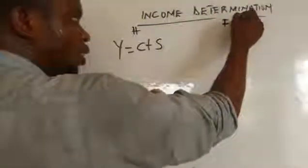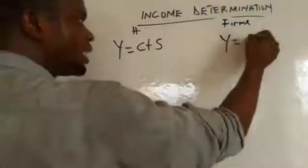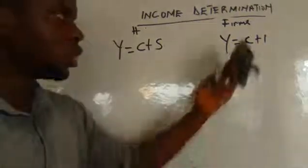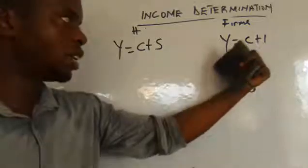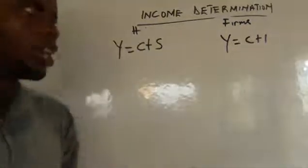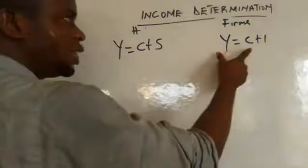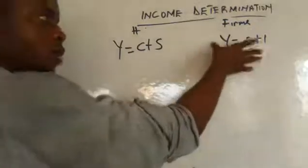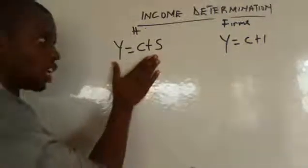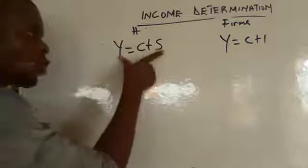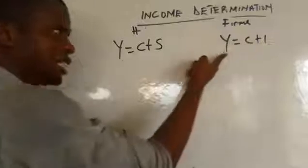For the firms, the second participant, the income function becomes Y = C plus I, where C is consumption and I is investment. The household income function (Y = C + S) is aggregate supply, because the saving portion is the supply of money. The firm income function (Y = C + I) is aggregate demand, because it demands the money.